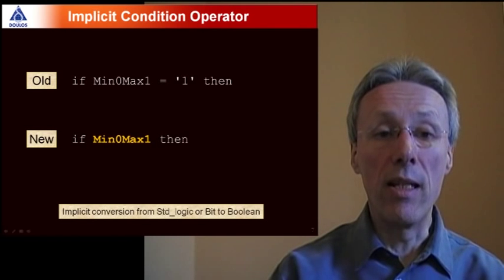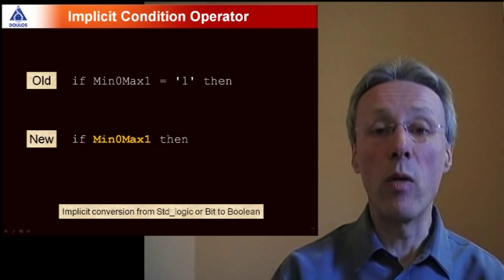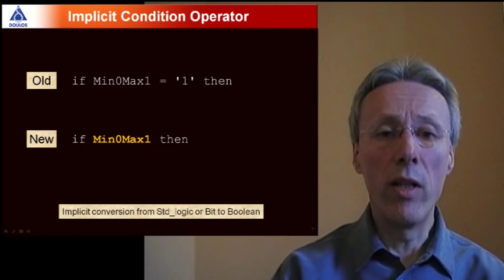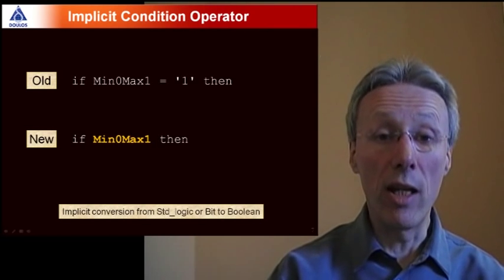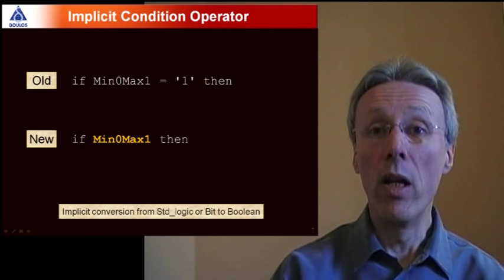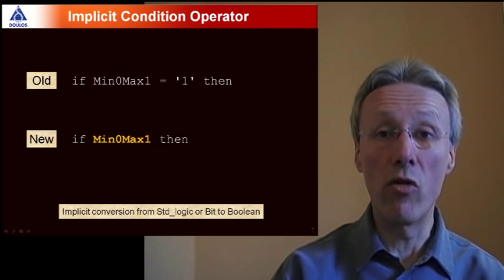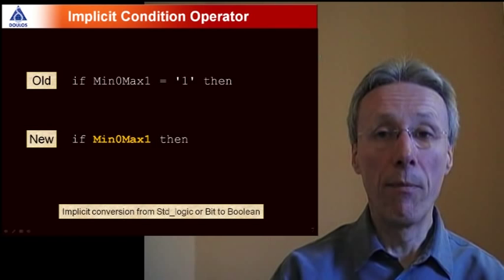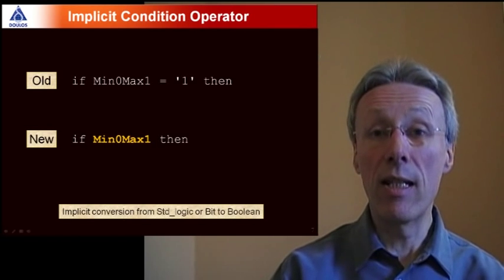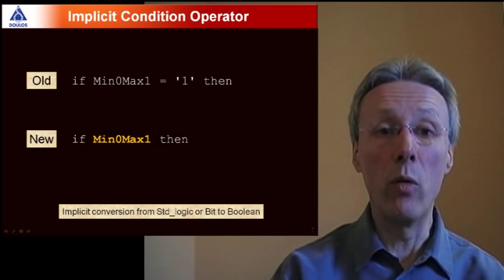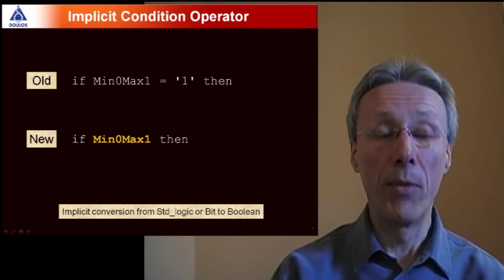Now moving on to the next statement inside the process, the if statement. We start off by saying if min max equals 1 then. So many of you will recognize the issue in VHDL that when you're writing expressions using the type standard logic, you've got to very explicitly compare standard logic values with zeros, ones, x's and so on in order to build boolean values for use in constructs like if statements. So VHDL 2008 supports a so-called condition operator and what the condition operator does is to convert bit and standard logic values to the type boolean so that they can be used in conditions. And the really neat thing is that in most common circumstances that condition operator can be called implicitly, the so-called implicit condition operator, and that's what I'm illustrating here.